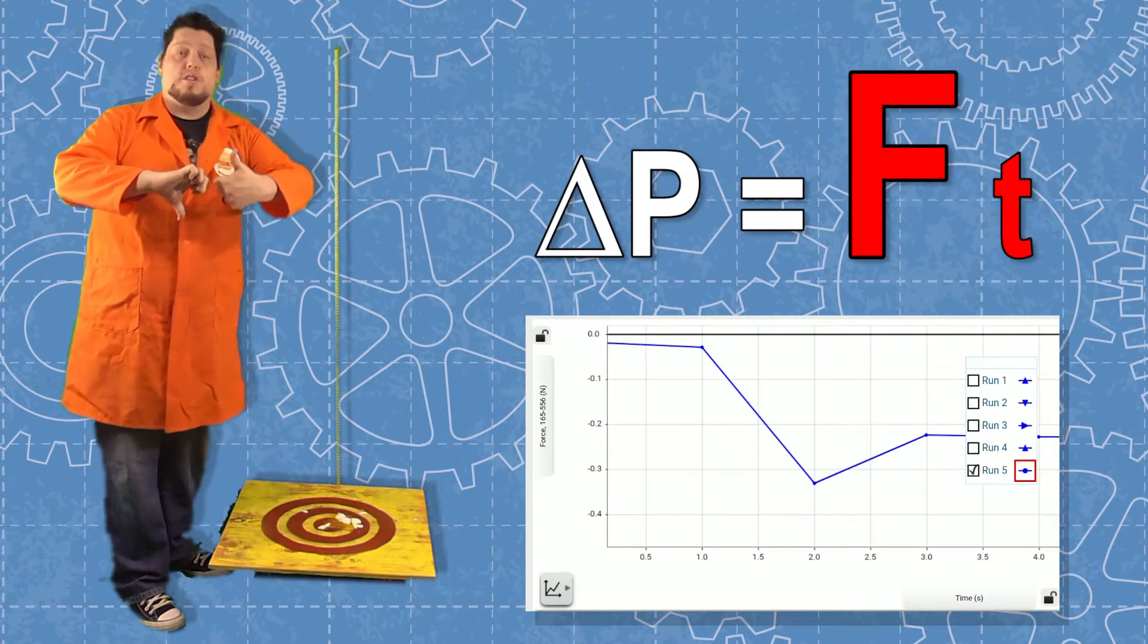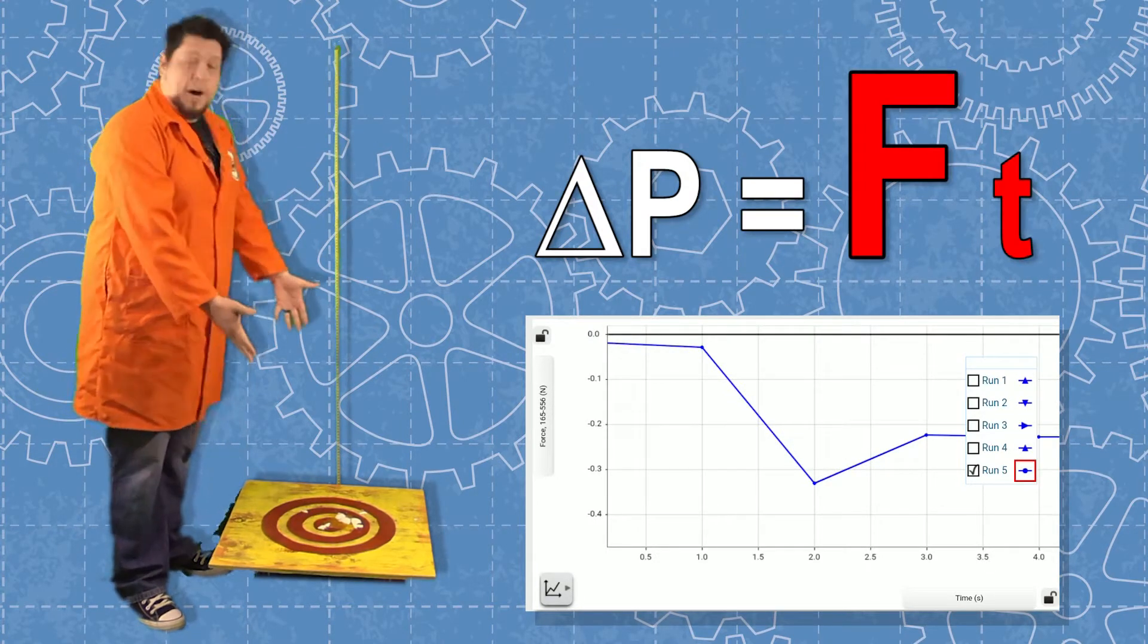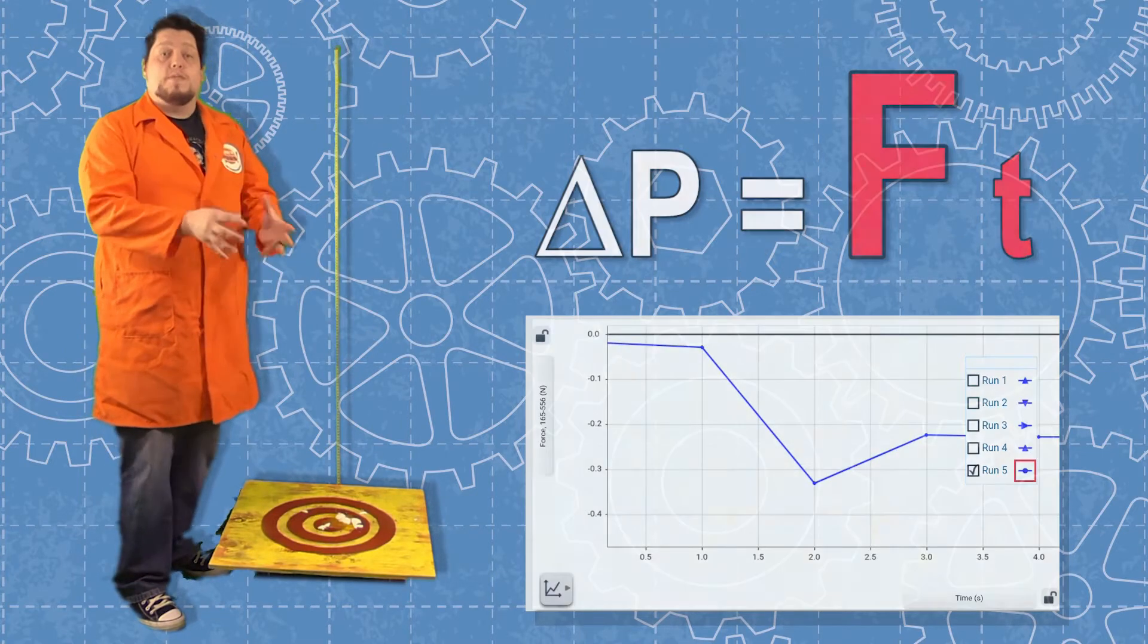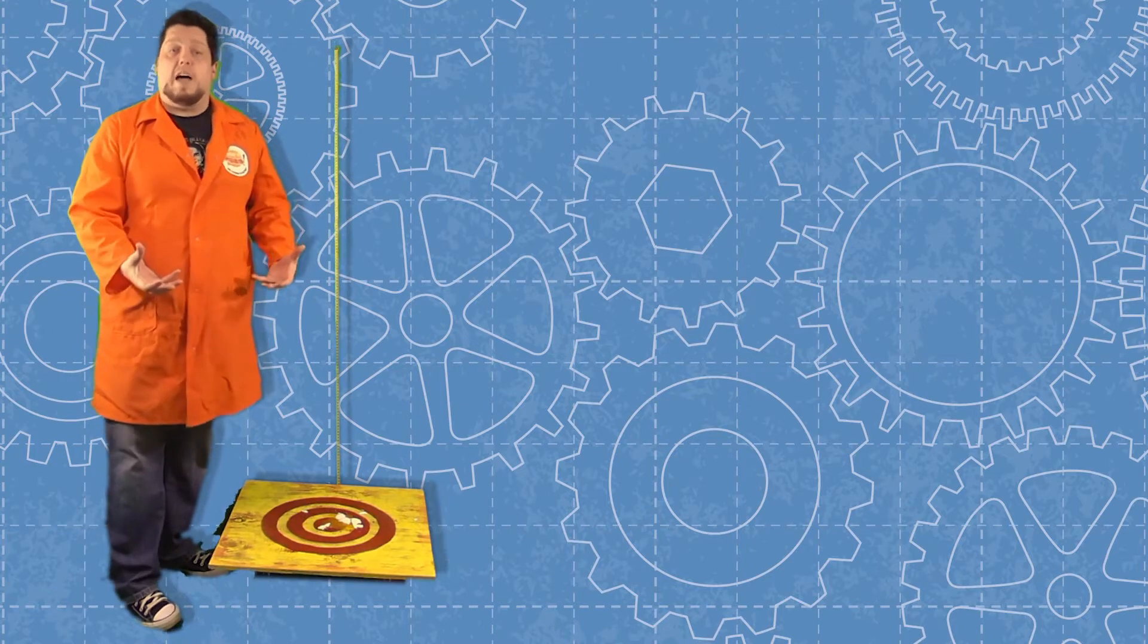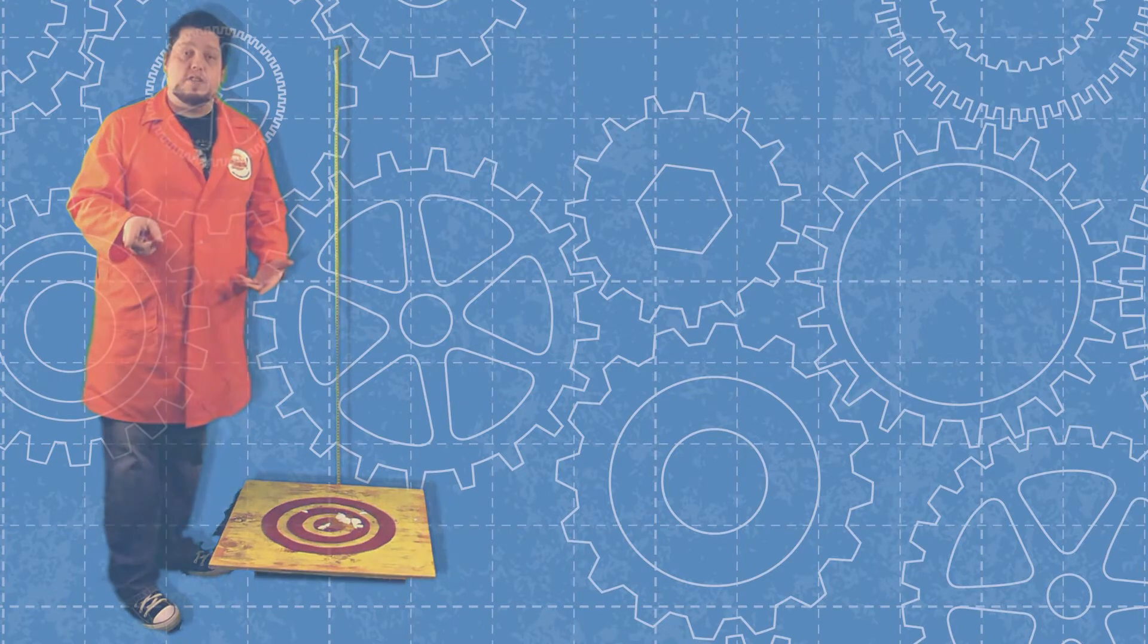because we get a larger force applied to the egg by the landing pad. But we've looked a little bit at how this impulse, this change in momentum, has been applied before. Let's look at our research again.